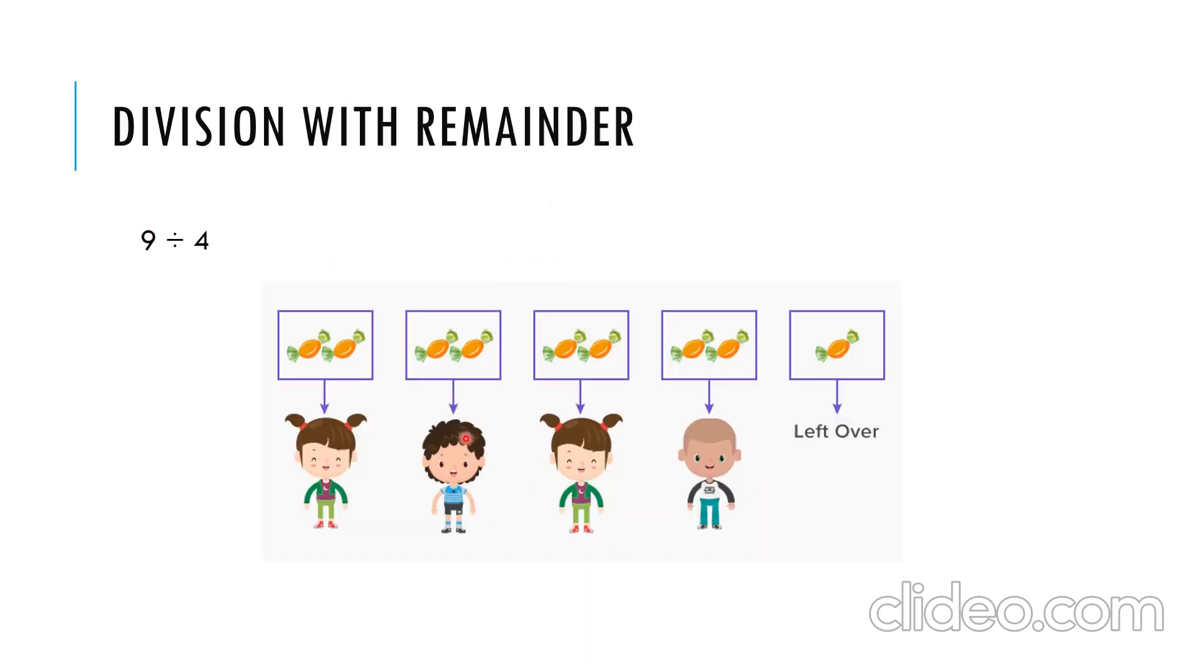Now, let's see division with reminder. Before going to start the sum, let's discuss what is that reminder. See here, 9 divided by 4. 9 toffees are divided among 4 children. See here, each one got 2, 2 toffees. 2, 2, 2, 2, 2. And 1 is left over.